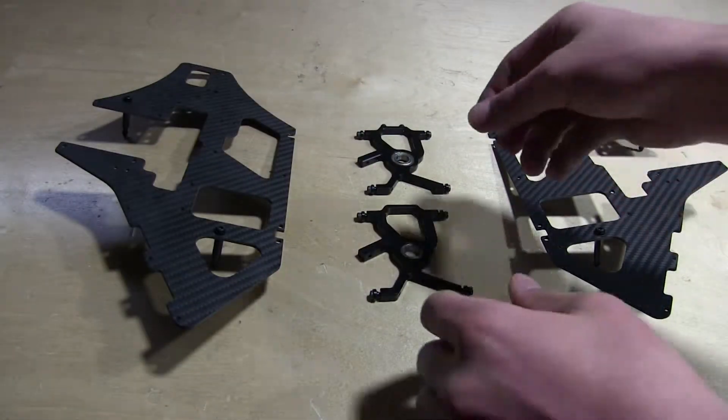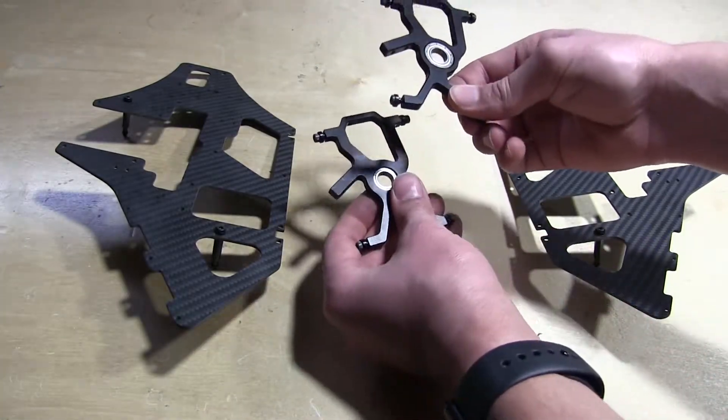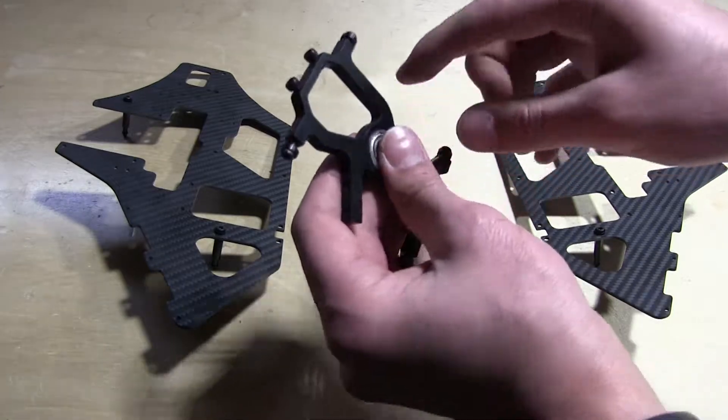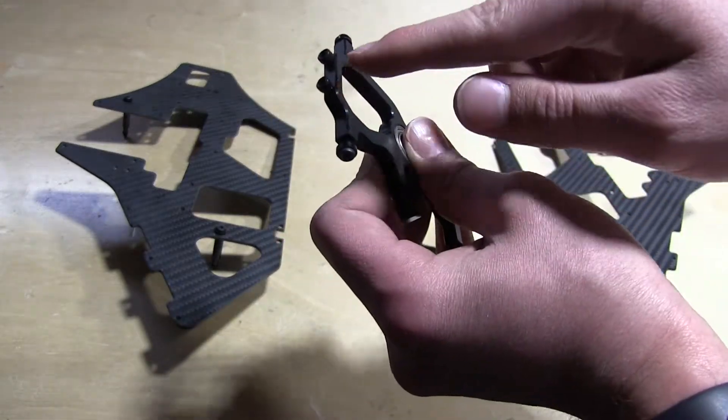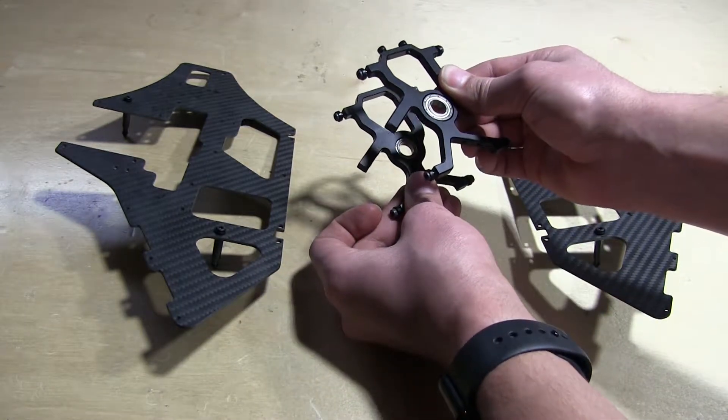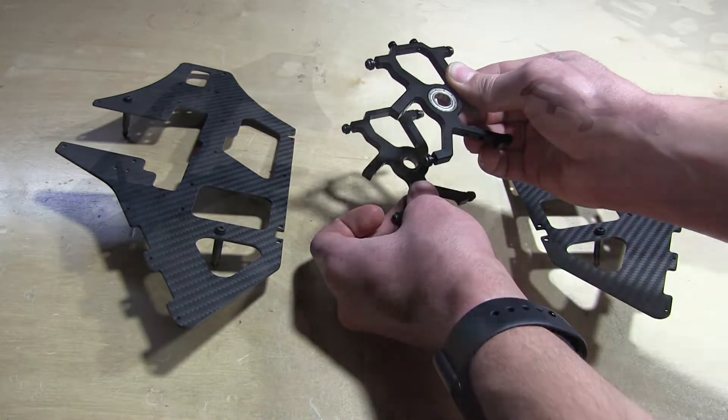Up next we'll be installing the bearing blocks. Keep in mind that there is a top and a bottom. It's easy to find out which is which - the top one is going to have these two screws for the anti-rotation pin bracket. Just make sure that both shapes line up like so and let's go ahead and install those.